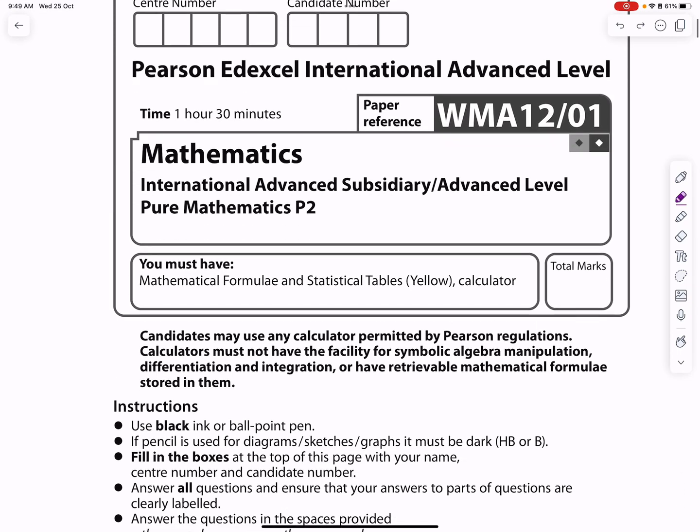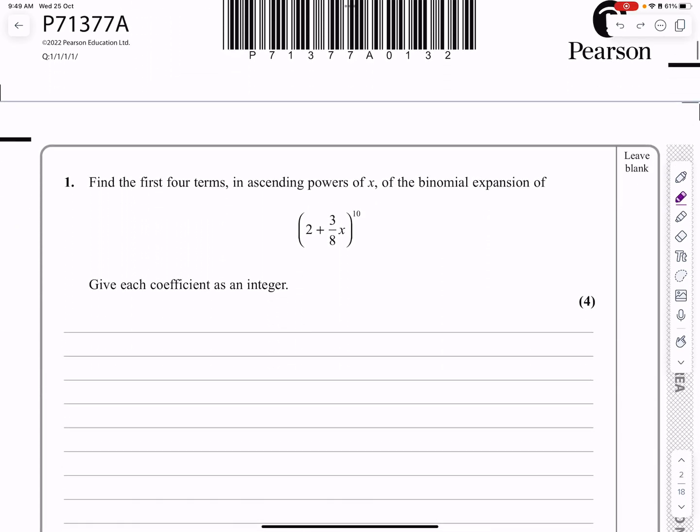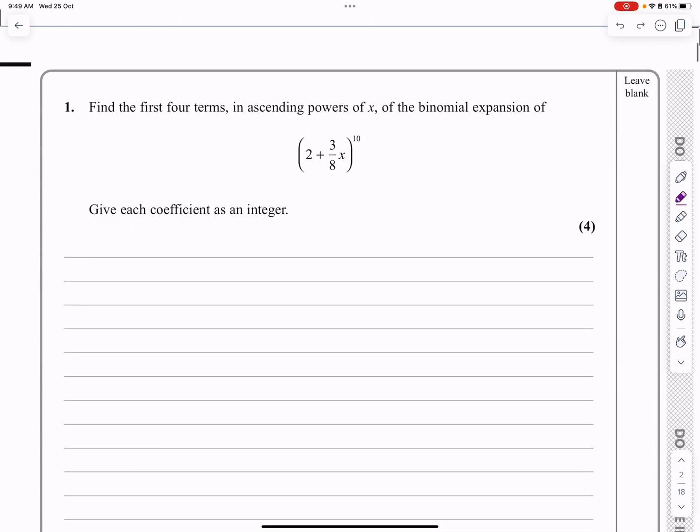Okay, this is the P2 paper from June 2022. This is question number one, and as we can see, this is a nice, straightforward binomial expansion question. Let's jump straight into it.